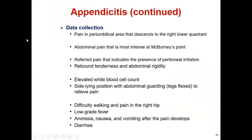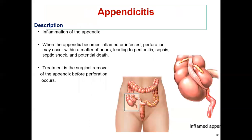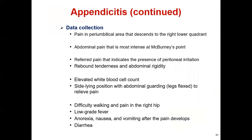For data collection, the signs and symptoms include right lower quadrant pain. This area is called McBurney's point. McBurney's point tenderness, rebound tenderness, loss of appetite, nausea, fever, and vomiting are key symptoms.